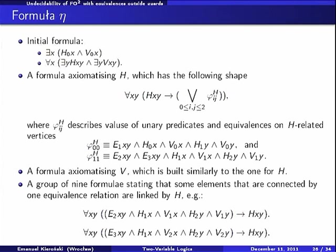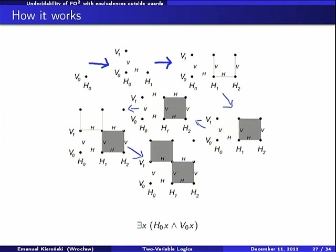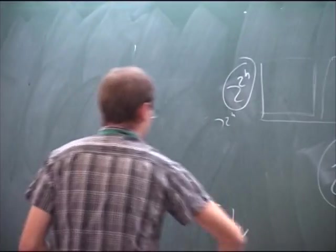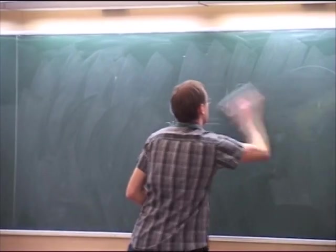It is, we will say that if we have some elements that are connected by one of the equivalence relations and have appropriate types, then they are connected by H. And that, let me show you how it works. So in our model, we know that there is elements of coordinate zero, zero, and that it has vertical and horizontal successors. This is stated explicitly by our initial formulas. Okay, probably this picture is again not visible.